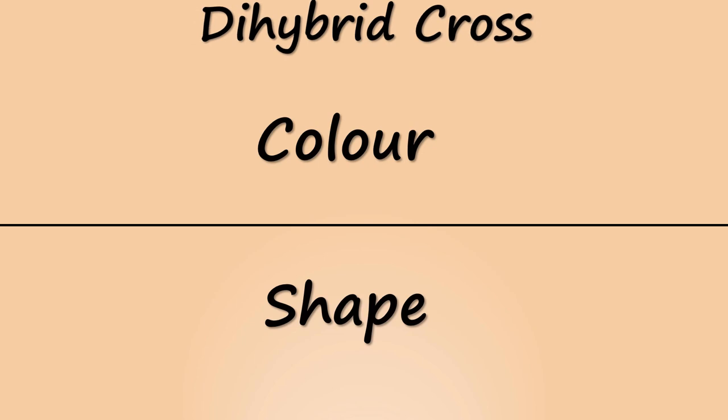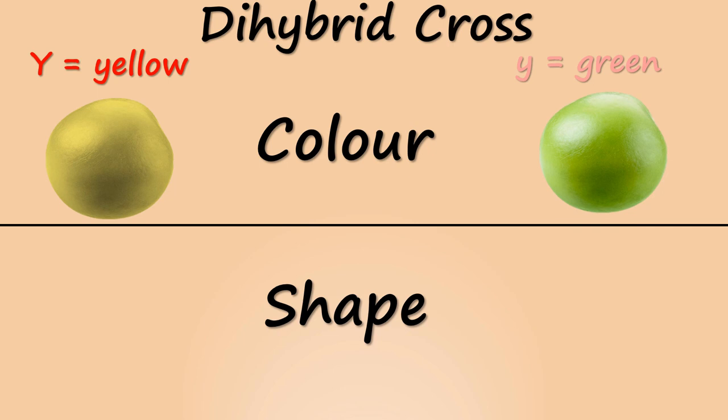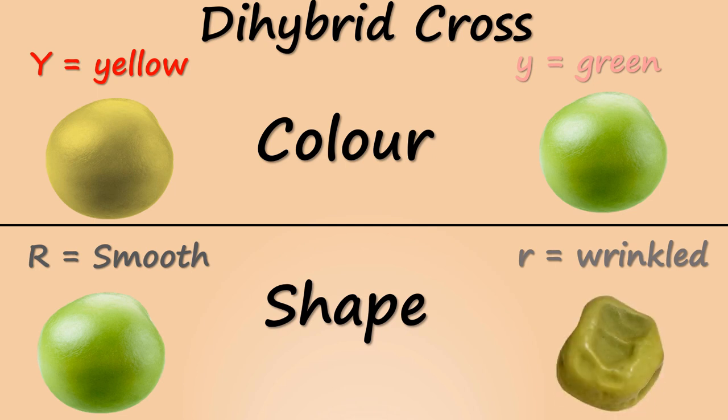We have two alleles for color and shape of pea. Y allele for yellow colored pea and y allele for green colored pea. R allele for smooth shaped pea and r allele for wrinkled shaped pea.